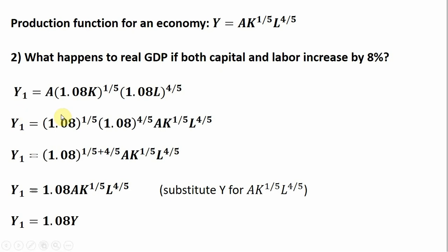Doing what we did before, factoring out 1.08 to the one-fifth power and 1.08 to the four-fifths power, we get this. Summing up the exponents equals 1.08 raised to the one. Then doing our substitution, our new output level will be 8% higher than our old output level.